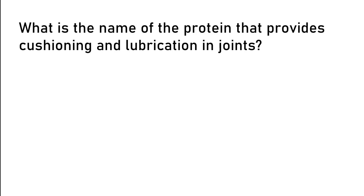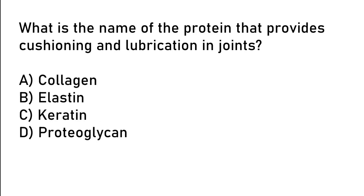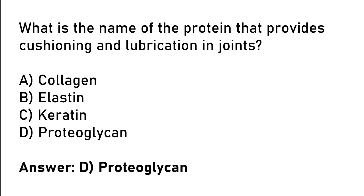What is the name of the protein that provides cushioning and lubrication in joints? Collagen, elastin, keratin, proteoglycan. So the correct answer is option D. Proteoglycan.